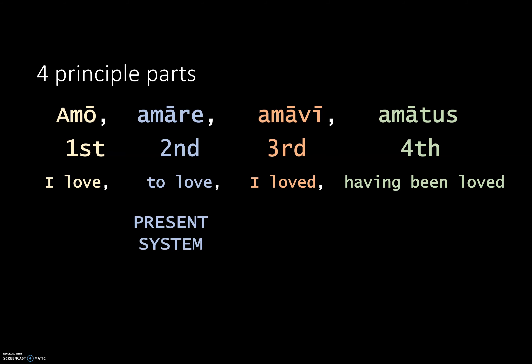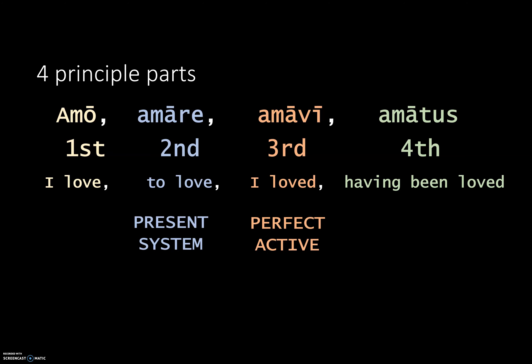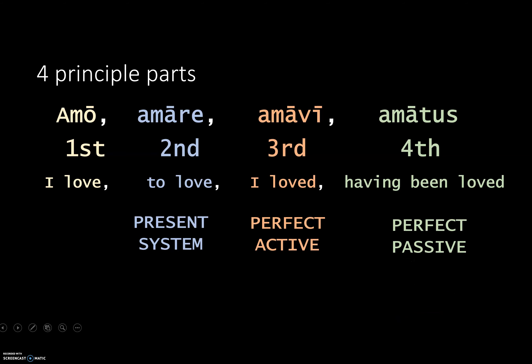Not only do these principal parts translate, they are also essential in forming the different tenses. The second principal part is used for the present system, both active and passive. The third principal part is used for the perfect active system, and the fourth is used for the perfect passive.